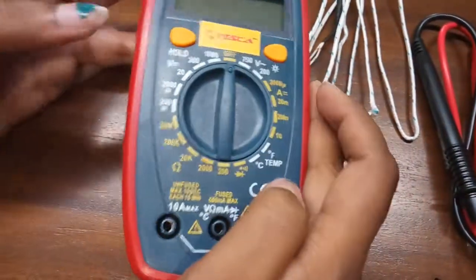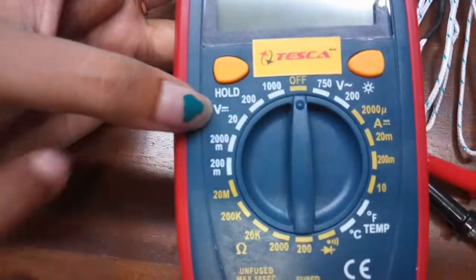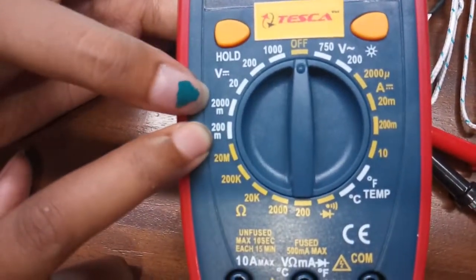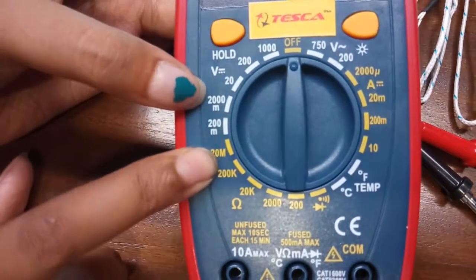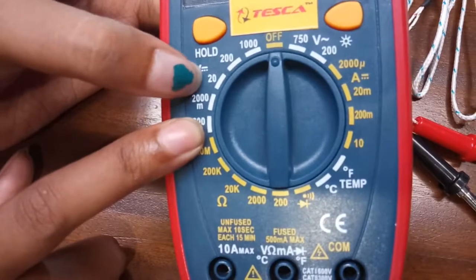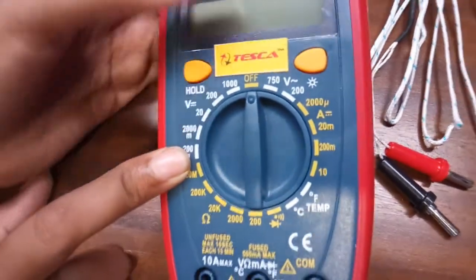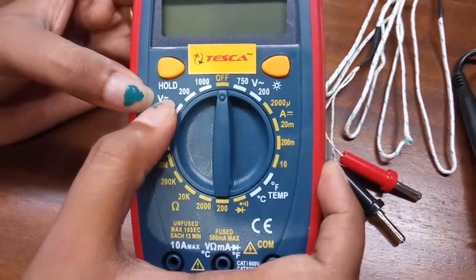First, we will start from here. This is to measure DC voltage. The range is from 0 to 200 millivolt, then 0 to 2000 millivolt, then 20 volt, 200 volt and the maximum range is 0 to 1000 volt. So this is the DC voltage. As you can see, it is denoted by a straight line.